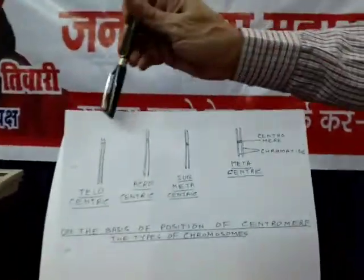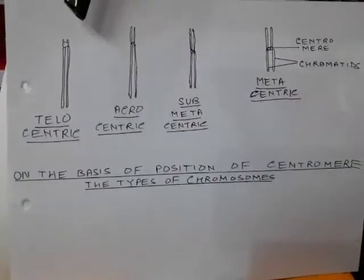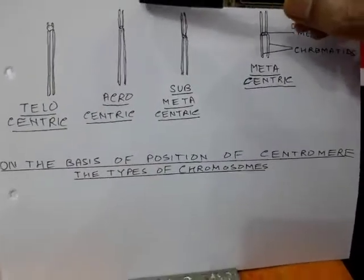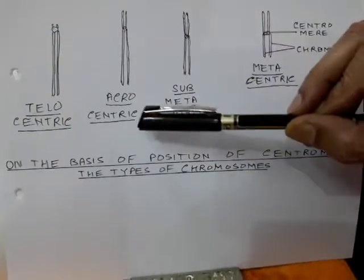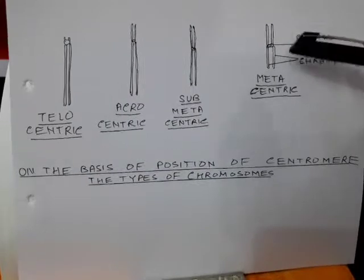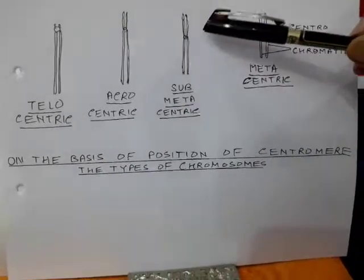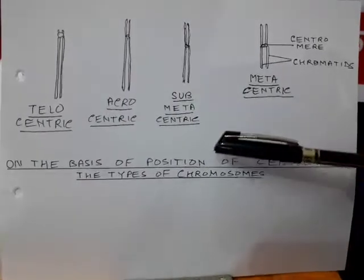The position of the centromere or primary constriction may vary in a chromosome. On the basis of the location of this primary constriction, chromosomes may be divided into four morphological types. If the centromere is present just at the terminus, such chromosomes are called telocentric. If it is present near the tip, it is called acrocentric. If the centromere is present in the middle, such chromosomes are called metacentric. And if it is slightly displaced from the middle, they are called submetacentric.